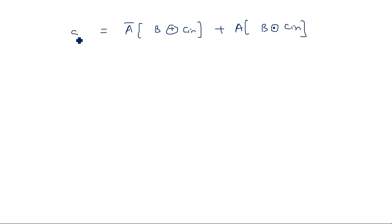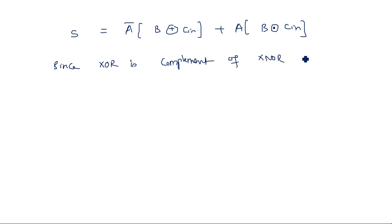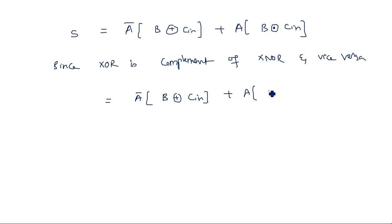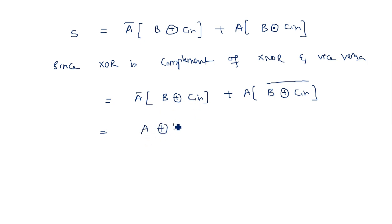Since XOR is the complement of XNOR and vice versa, we can write: S = A̅(B ⊕ Cin) + A(B ⊕ Cin)̄. This is equivalent to A̅(B ⊕ Cin) + A·(B ⊕ Cin) complement, which is just one more XOR between A and (B ⊕ Cin). Therefore, S = A ⊕ B ⊕ Cin. This is the sum expression.